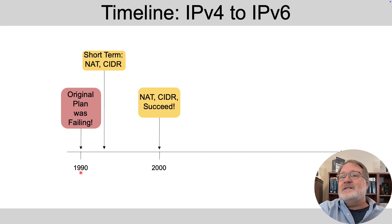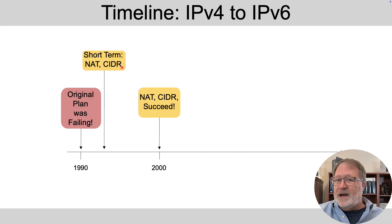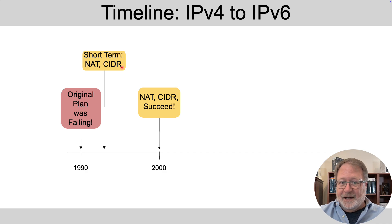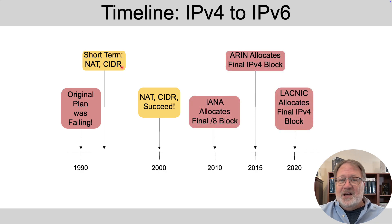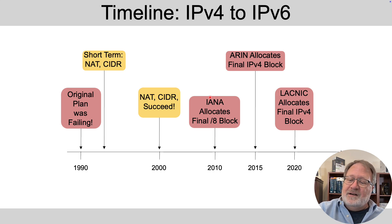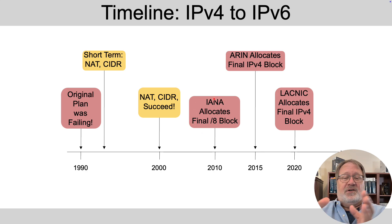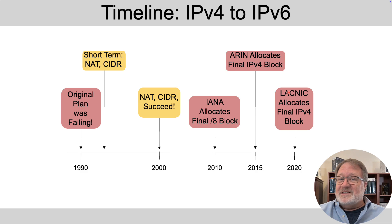The fix for IPv4 was to use something called NAT and CIDR, which weren't used before. They succeeded by greatly reducing the rate of consumption of the available remaining public IPv4 addresses. No longer were people assigned entire Class A, B, and C networks. But even with this hugely successful solution, eventually IANA ran out of IPv4 addresses to give to RIRs. RIRs like ARIN and LACNIC ran out of addresses to give to their customers.